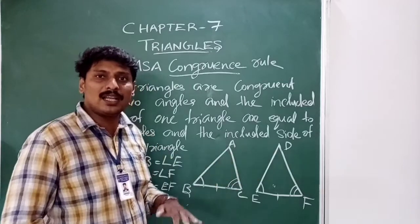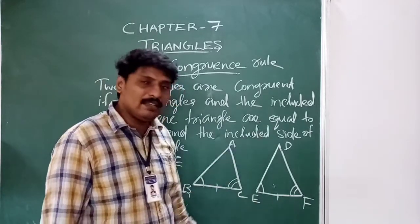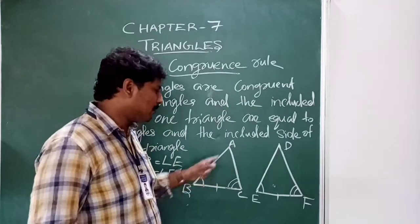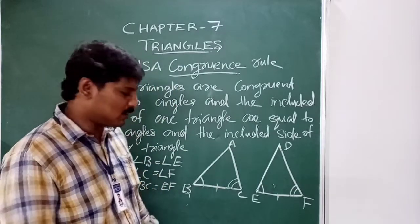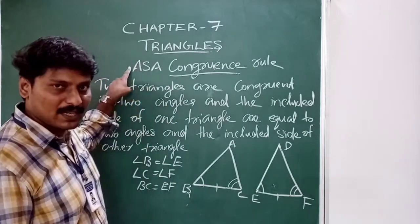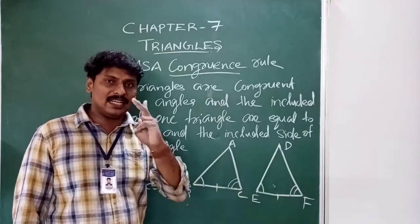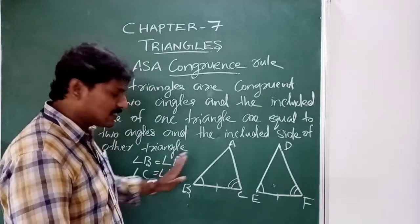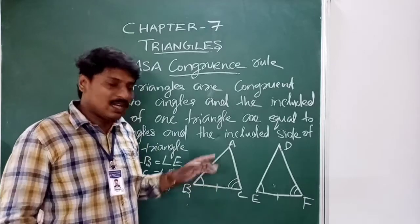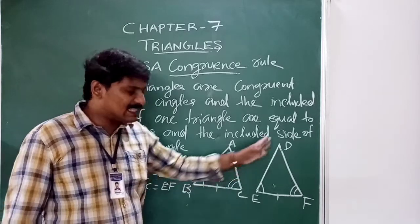The corresponding angles are equal and the triangles are the same size and same shape. The corresponding sides are also equal — AC corresponds to DF.